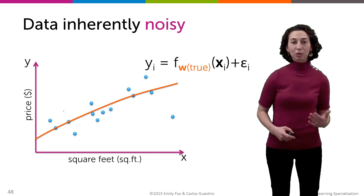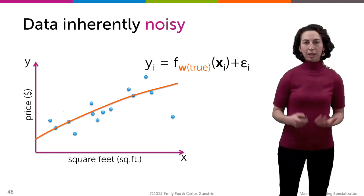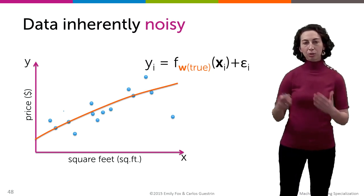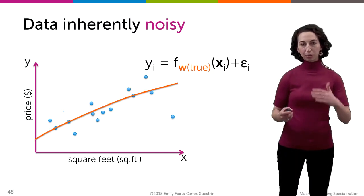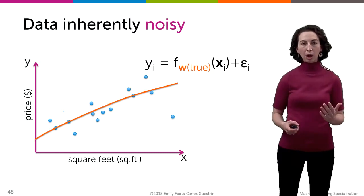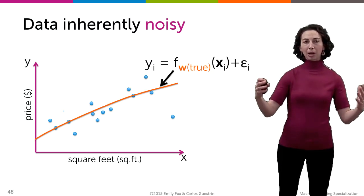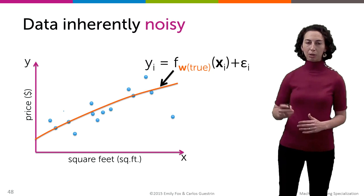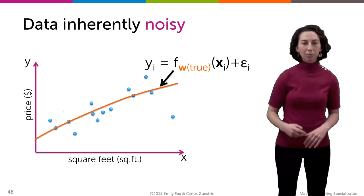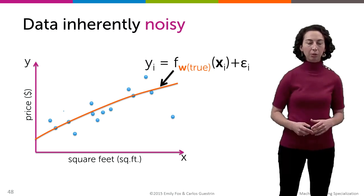Let's look at this first term, this noise term. As we've mentioned many times in this specialization, data are inherently noisy. So the way the world works is that there's some true relationship between square feet and the value of a house, more generically between x and y. And we're representing that arbitrary relationship defined by the world by f_w(true). It's just notation we're using for that functional relationship. But of course, that's not a perfect description between x and y, the number of square feet and the house value.